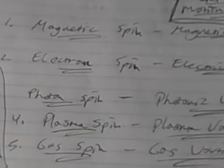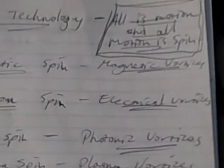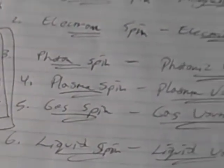But in each of these things, if you have magnetic spin you're going to be generating magnetic vortices. Electron spin, electrical vortices. Photon spin, photonic vortices, whatever that means, like maybe light emission.